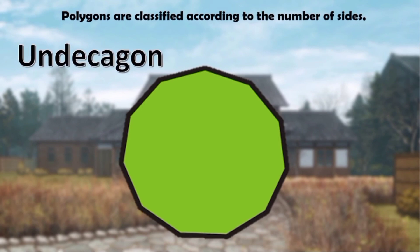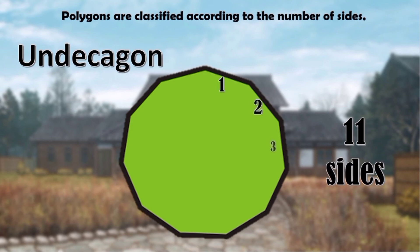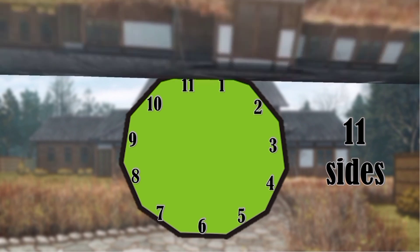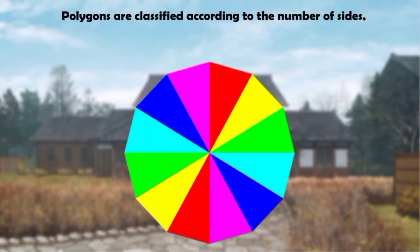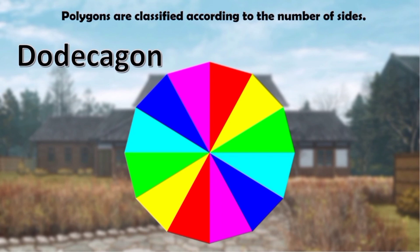An octagon has 8 sides. A nonagon has 9 sides. A decagon has 10 sides. An andecagon has 11 sides. A dodecagon has 12 sides.